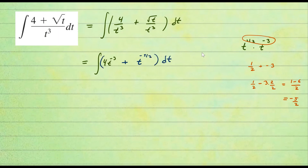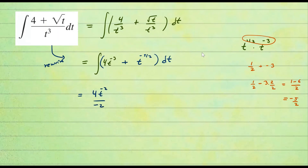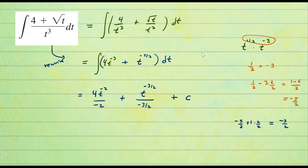So we have four t to the negative three plus t to the negative five over two, integrating with respect to t. Adding one to each power: four t to the negative two over negative two for the first term. For the second, negative five halves plus one gives negative three halves; so t to the negative three halves over negative three halves. Simplifying: four over negative two is negative two, so negative two t to the negative two, minus two over three t to the negative three halves, plus C.